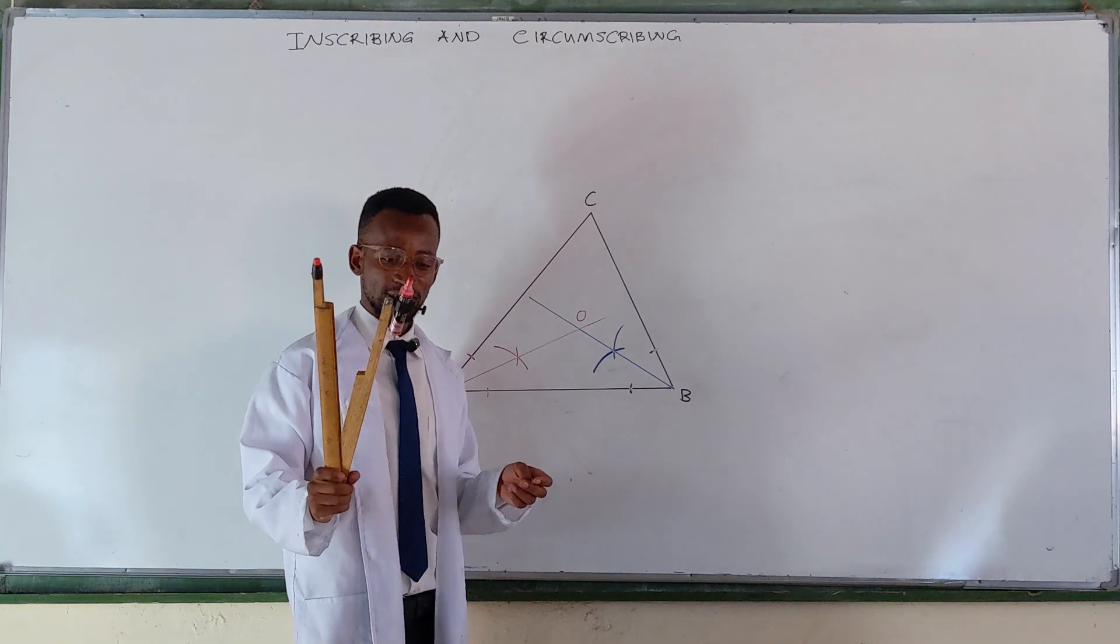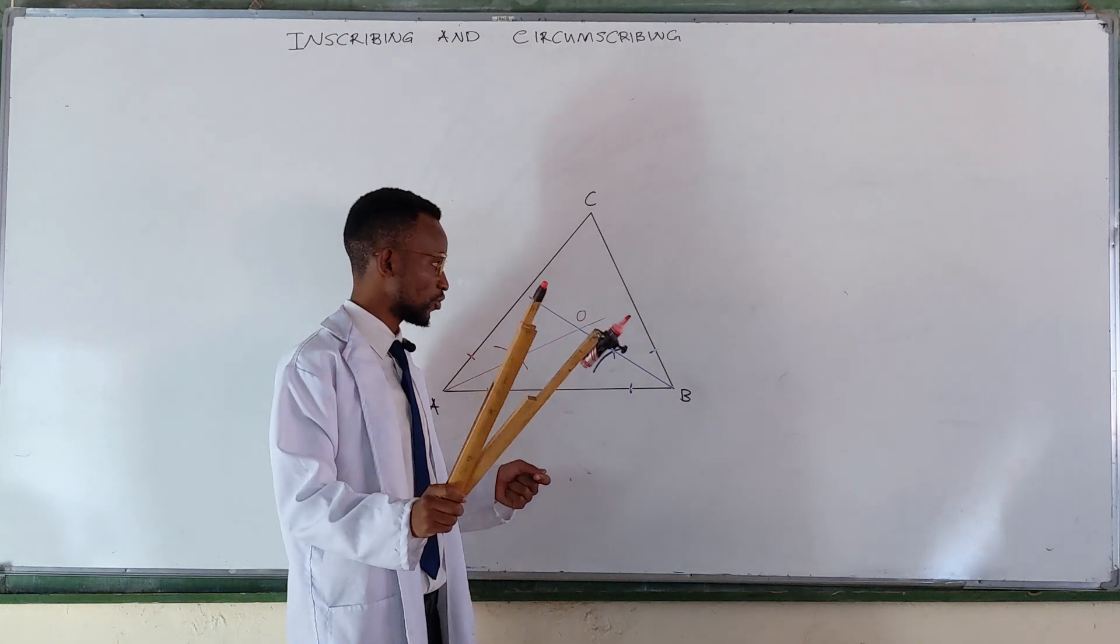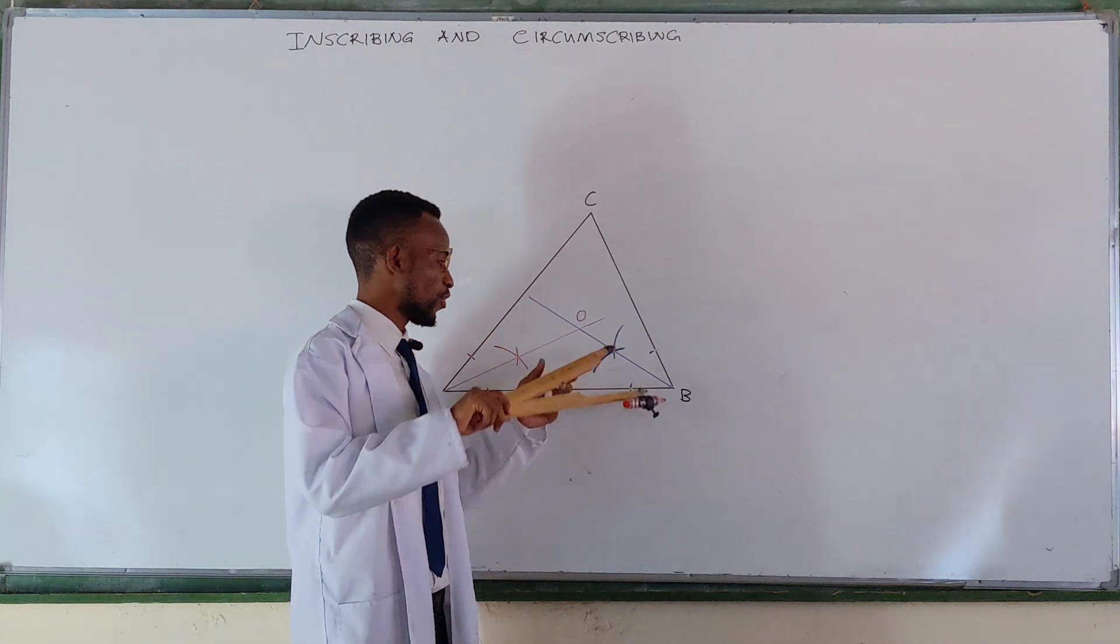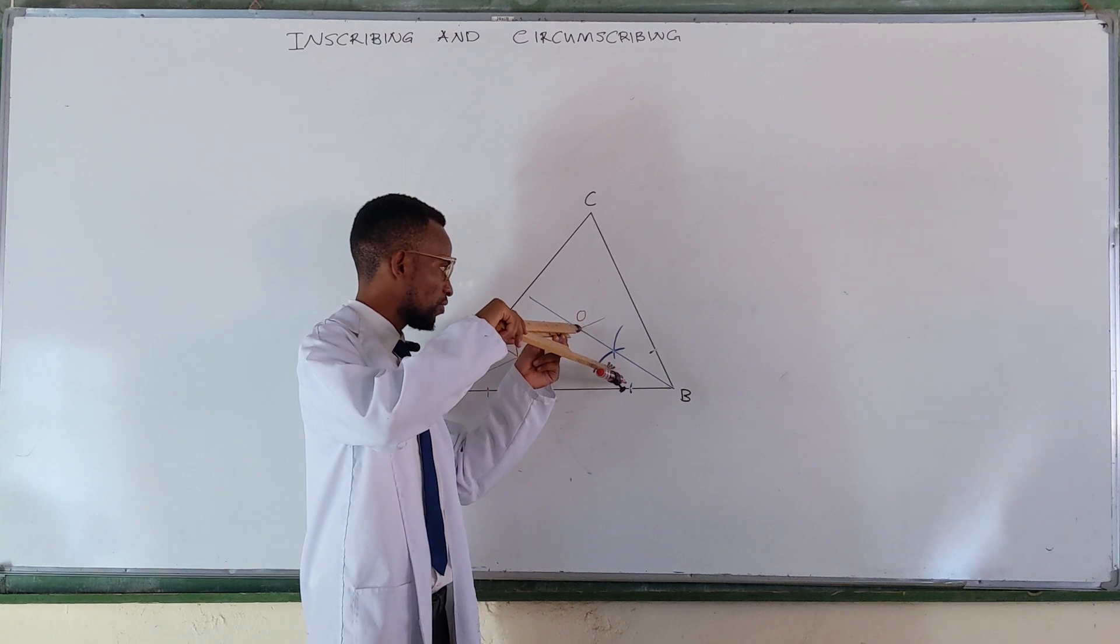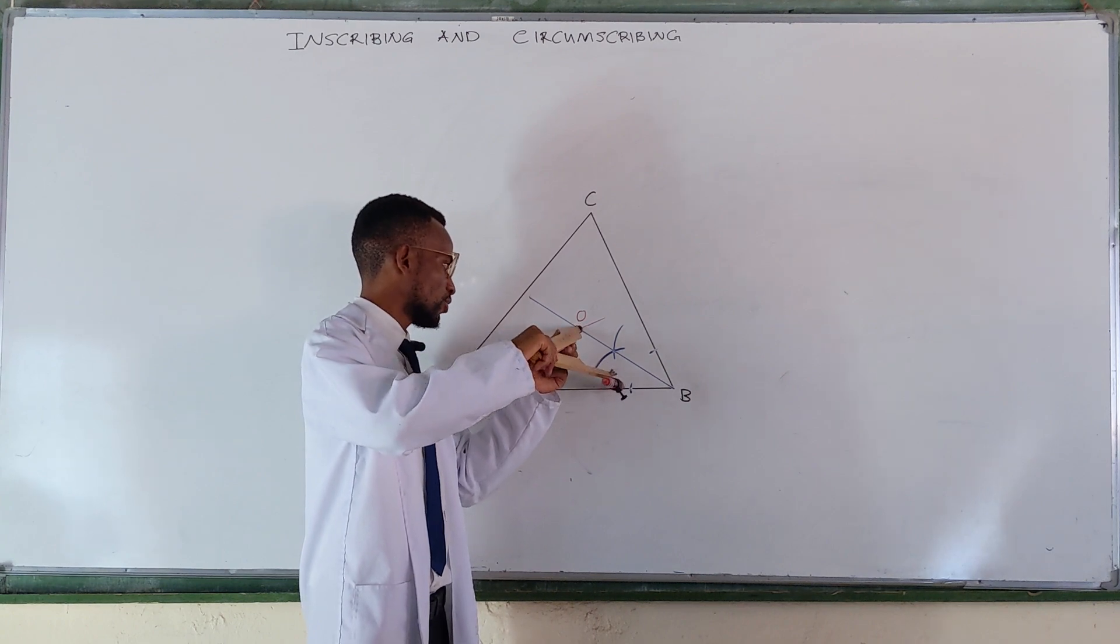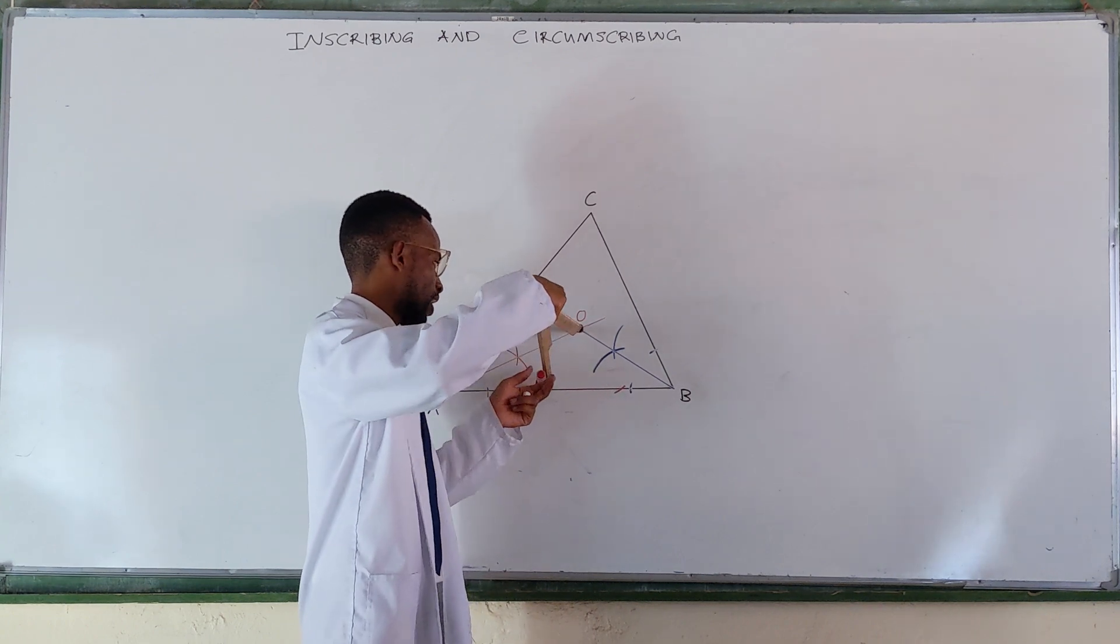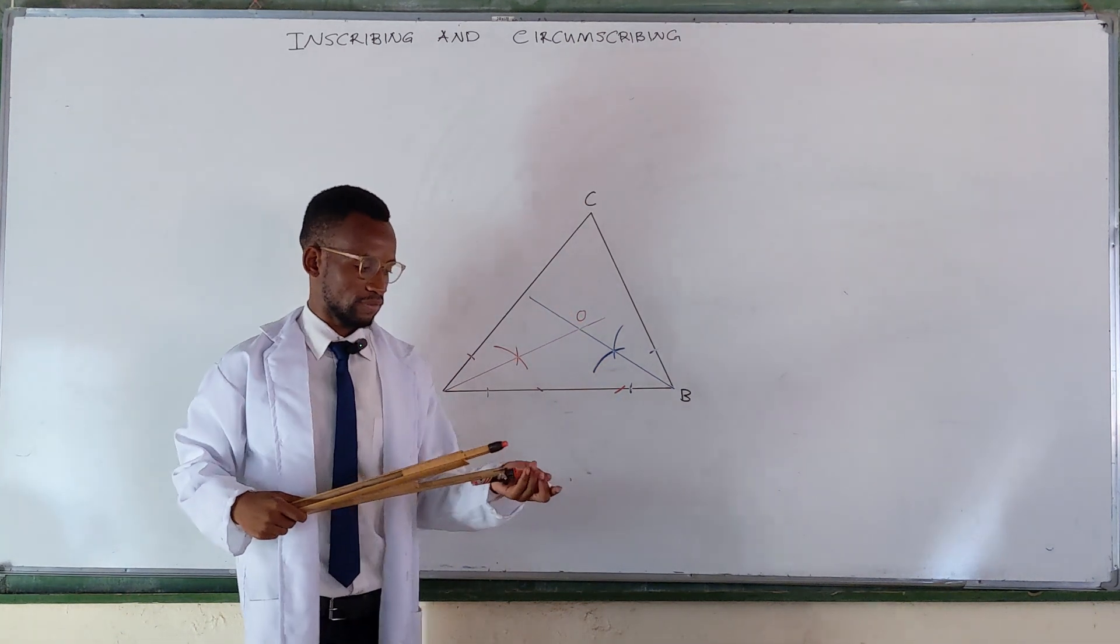For example, we can draw a line from this point to meet with the baseline at a perpendicular angle. So you get your compass, open it to any convenient radius such that when you place it at the center point, it is able to cut the baseline at any two points like that.